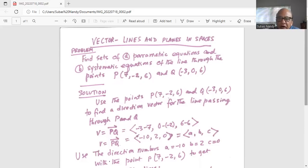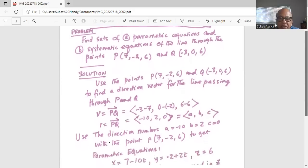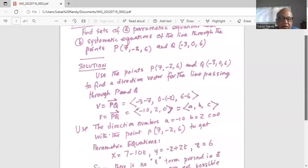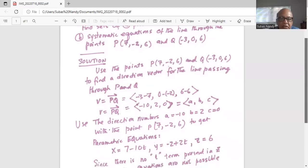So now use the direction numbers A is equal to minus 10, B is equal to 2, and C equal to 0 with the point P, which is 7, minus 2, and 6 to get the parametric equations.